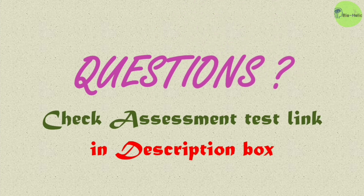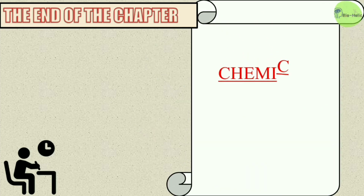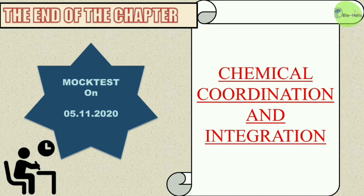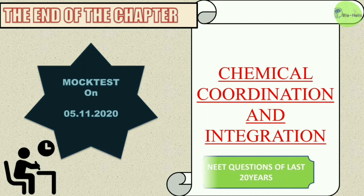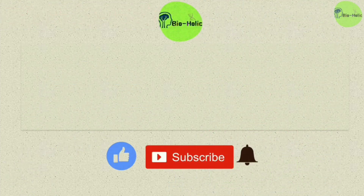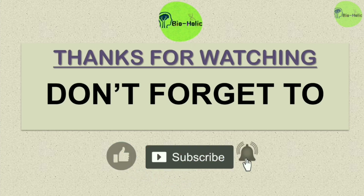In the description box you can find the self-assessment test — don't forget to take the test and evaluate yourself. This is the end of the chapter 'Chemical Coordination and Integration.' Next Thursday, November 5th 2020, I will take a mock test on this chapter and discuss the previous 20 years of NEET papers related to this chapter, which will be very beneficial for NEET aspirants. From next Friday I will start a new chapter on plant hormones. Thanks for watching — don't forget to like, share, and subscribe to Bioholic. See you soon!